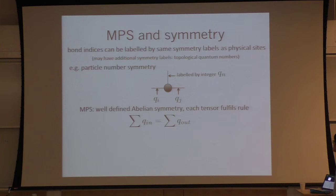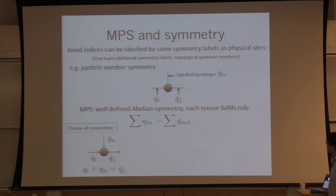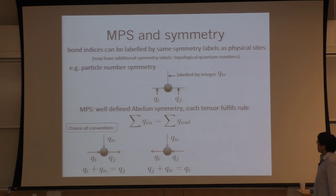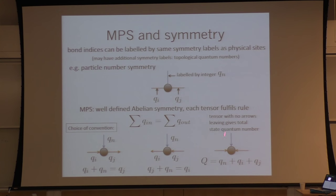For a tensor with particle number symmetry — or S_z symmetry, like spin up or spin down — the bond indices can be labeled by the same kind of quantum numbers. For Abelian symmetries, there's a very simple conservation rule: you can work with matrix product states where the sum of the quantum numbers always equals zero. You draw arrows to indicate which way quantum numbers are going into a tensor, and the symmetry condition is that elements are only non-zero if the quantum numbers of the indices add up to zero — in equals out. This is essentially charge conservation.